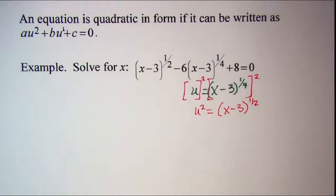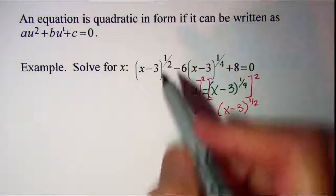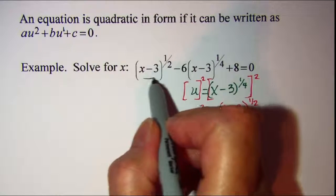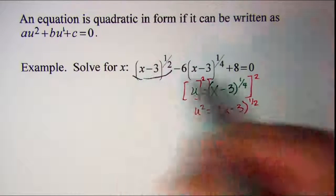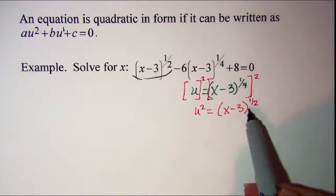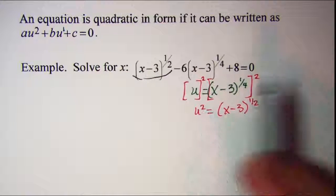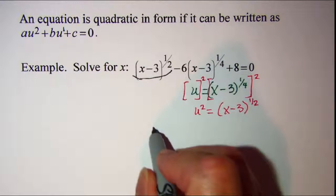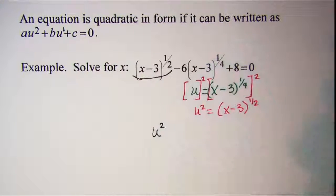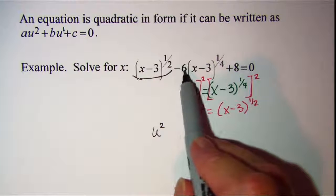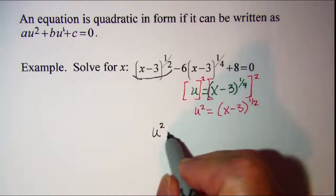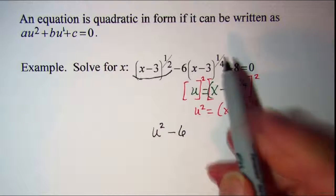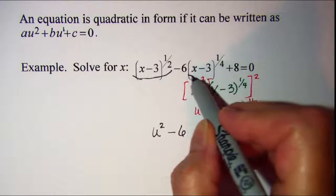So we're going to make some substitutions. This term x minus three to the one-half power is equal to u squared. So in place of this term I'm going to put u squared. And then I have minus six times.